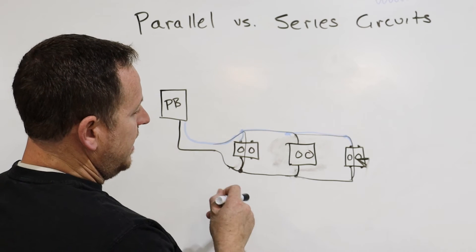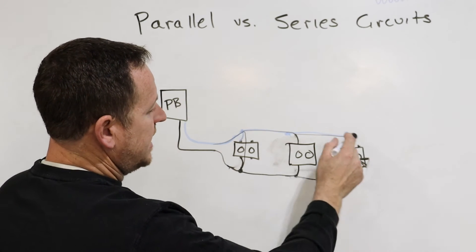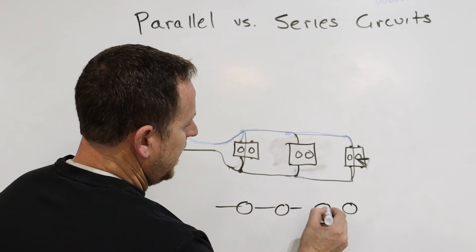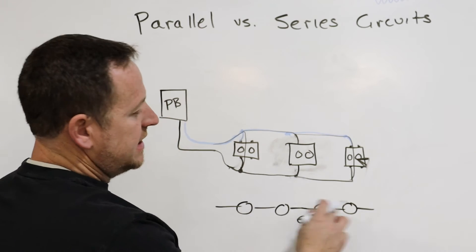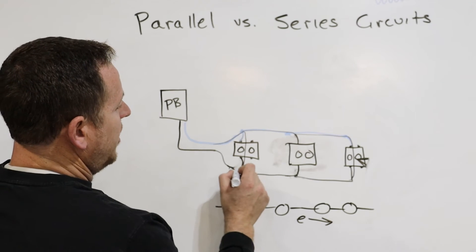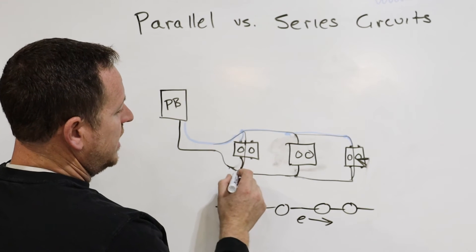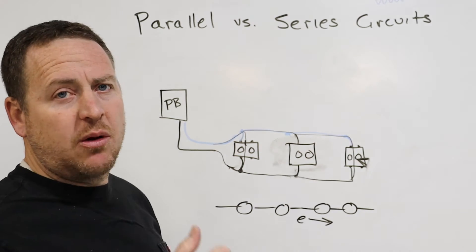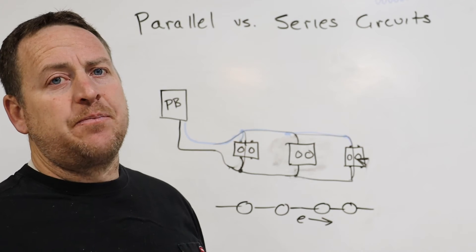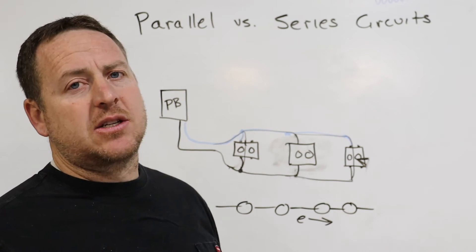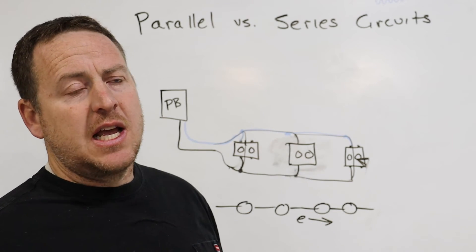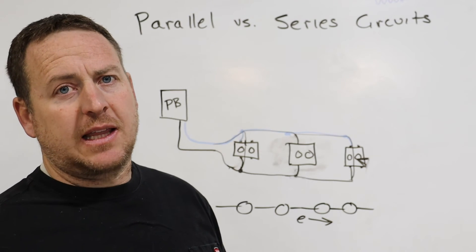In a series circuit, every device gets the same amount of current flow — like a string of Christmas lights where the flow of electrons is the same throughout. But in a parallel circuit, the flow of current is going to be different at each outlet depending on what you have plugged in. This is very important when you have an AC system. Go look at your toaster, a mixer, or a space heater — it'll say it's rated for 110 volts and maybe 1200 watts.